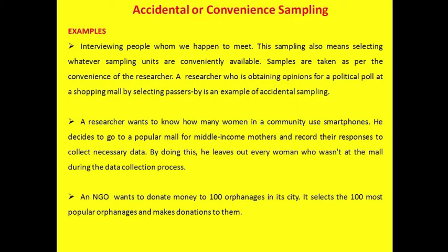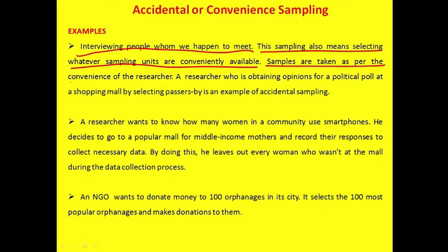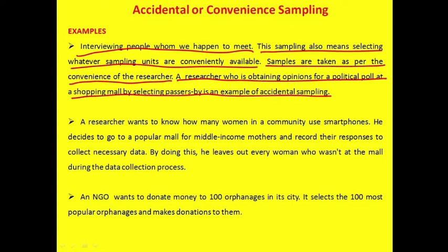Examples of accidental or convenience sampling include interviewing people whom we happen to meet, and selecting whatever sampling units are conveniently available. For instance, a researcher obtaining opinions for a political poll at a shopping mall by selecting passersby — interviewing whoever is easily accessible — is an example of accidental sampling.